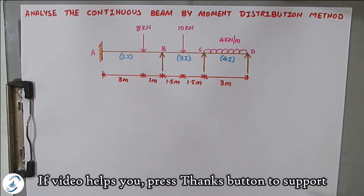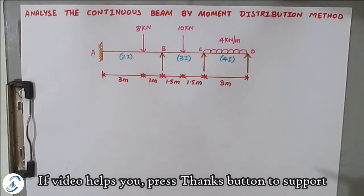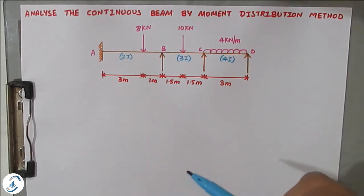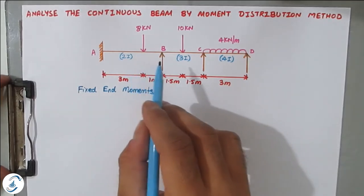As discussed in the last problem, there are primarily four steps in the moment distribution method: first, find fixed end moments; second, find distribution factors; third, do calculations using the moment distribution table; and fourth, draw the bending moment diagram. The first step is to find fixed end moments.